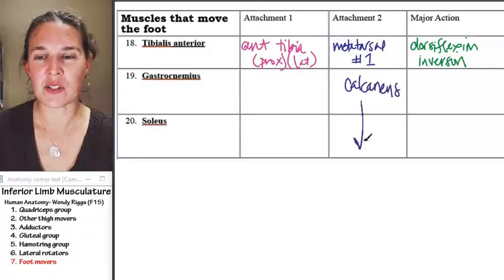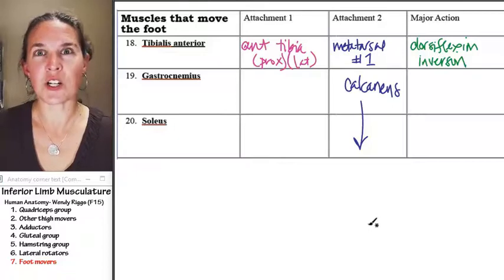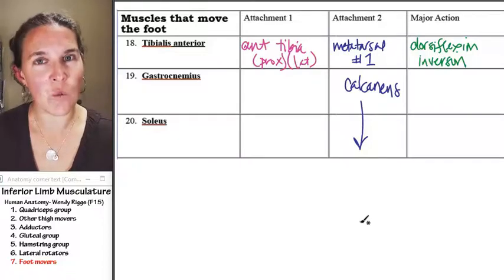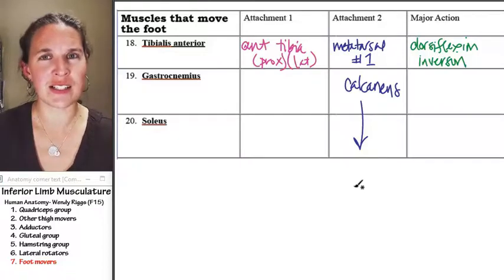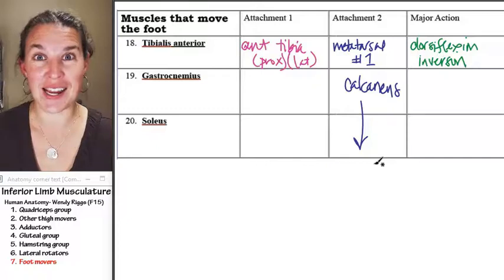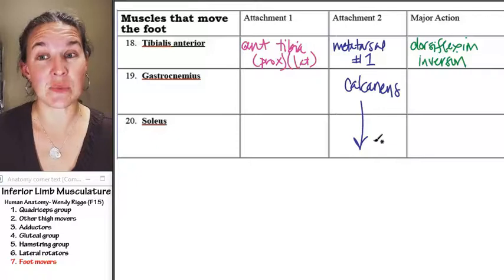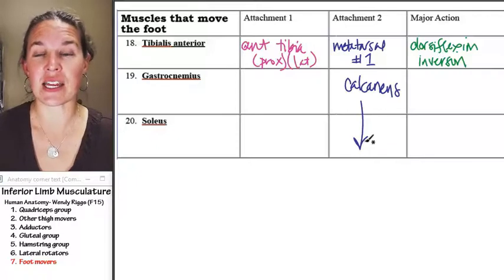And who remembers what the calcaneus is? The calcaneus is what you walk upon when you dorsiflex for a duck walk. But of course, everybody knew exactly what I just said, right? Calcaneus is your heel bone. It's a tarsal, and the specific name of that tarsal is the calcaneus.